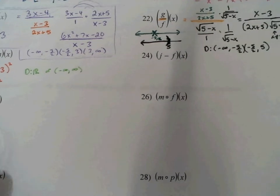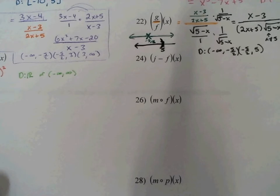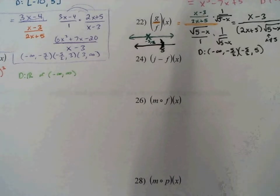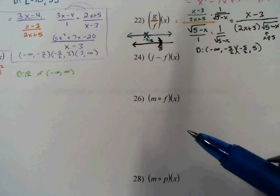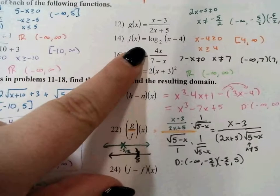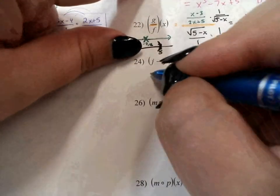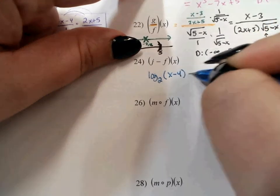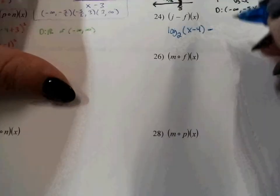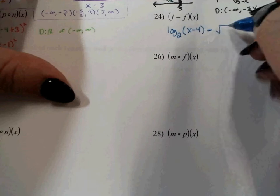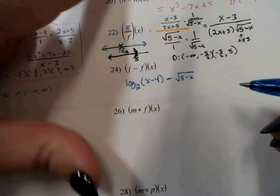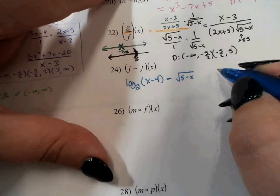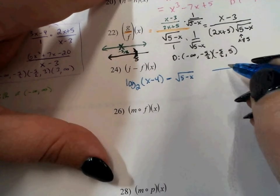Number 24 asks for the function j minus f. So j is log base 2 of x minus 4, minus f of x, which is the square root of 5 minus x. When imagining their domains, the log only exists from 4 to infinity.